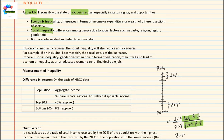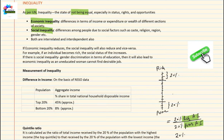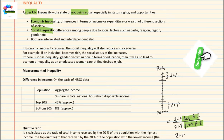Economic inequality means differences in terms of income, expenditure, or wealth of different sections of society. Wealth includes land, house, gold, and financial assets. Some people have more financial assets, some people have less income. Some people are earning high income, others are earning low income. So this is economic inequality.